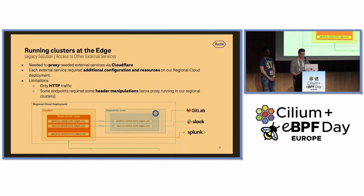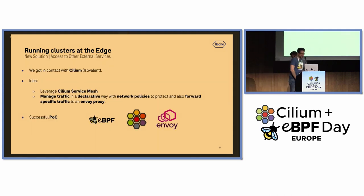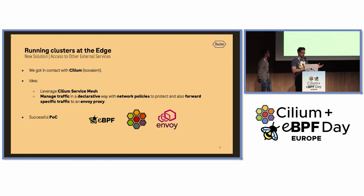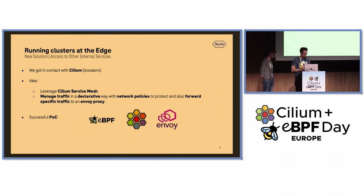We ended up contacting the Cilium team. Cilium was becoming the de facto networking solution for Kubernetes by that time. We approached them, explained our problem, and they came up with a very interesting idea: what if you could manage your network traffic declaratively with network policies — not only to secure the traffic but also to forward specific traffic to a proxy that you can configure in many ways, such as creating a WebSocket tunnel to a backend where you already have access from your edges, encapsulating the original request inside it. We started a POC with Cilium, and here we are today.